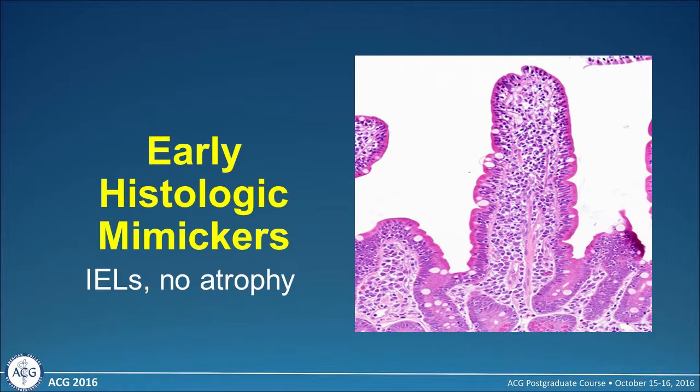For this talk, I'm going to define and divide some of the mimickers as early mimickers — meaning those patients who have intraepithelial lymphocytes, or IELs, but their villi are intact without atrophy — and then later we'll talk about those who have villus atrophy.